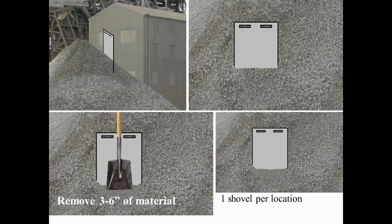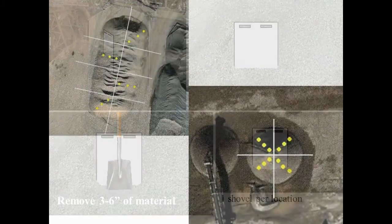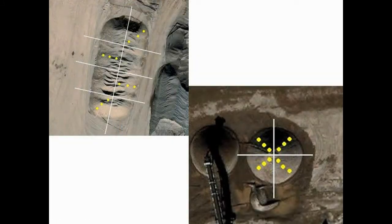Utilizing a square point shovel, take the sample near the top, then take one at the middle, and finally near the bottom of the stockpile. The sample taken at each location shall be one shovelful of material. Repeat this operation at the sampling locations as shown and combine all samples taken from the stockpile.